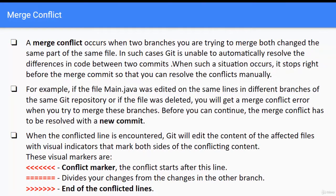When the conflicted line is encountered, git will edit the content of the affected files with visual indicators that mark both sides of the conflicting content. The visual markers start with a left-hand arrow conflict marker where the conflict starts. Then you have a line with equals signs that divides your changes from the changes in the other branch. And the one with the right-hand side arrow marks the end of the conflicted lines.